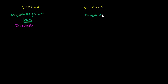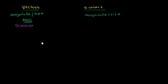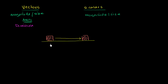It will hopefully make sense in a second when I show you an example. Let's say that's the ground right there — let me do the ground in a more appropriate ground-like color, so this is green right over here. And let's say I have a brick on the ground. I pick up that brick and move it over to this place right over here. Then I take a ruler out and say I've moved the brick five meters.